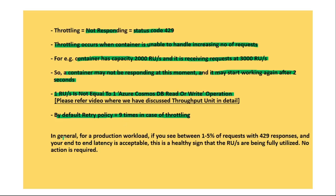In general for a production workload, if we see between 1 to 5% of requests with 429 responses and end-to-end latency is acceptable — meaning overall the system is stable and there are no user complaints — then that is a healthy sign that RUs are being fully utilized, and no action is required in such a case.